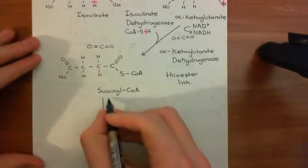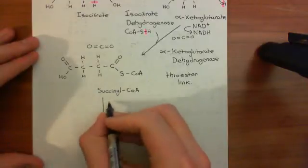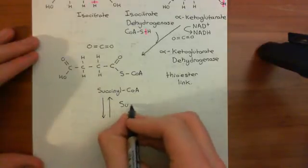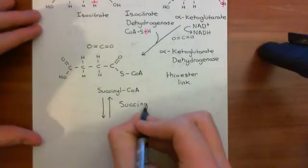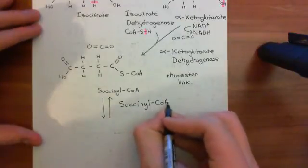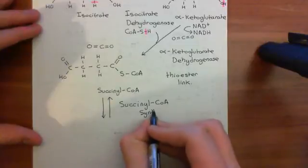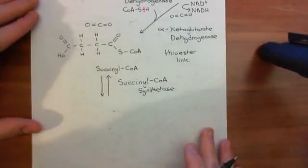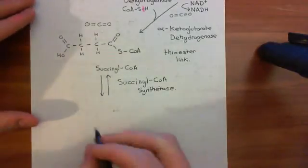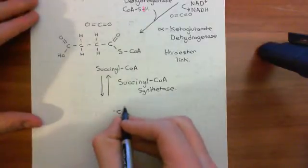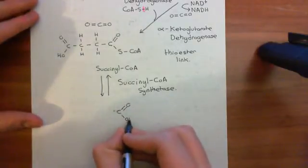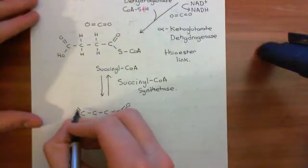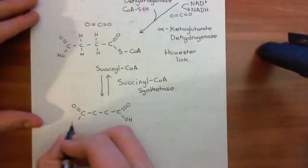All of the reactions from now on are going to be reversible — they can go forwards and backwards and will be catalyzed by the same enzyme. This enzyme is succinyl CoA synthetase, and it's actually named for the reverse reaction — for catalyzing the synthesis of succinyl coenzyme A. We're actually going to see the breaking apart of coenzyme A. We're going to see succinyl coenzyme A returned to succinic acid or succinate. Succinate is this four-carbon molecule where you have two carboxylic acid groups, one at either end.